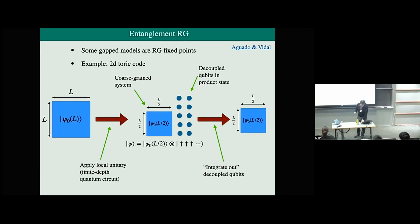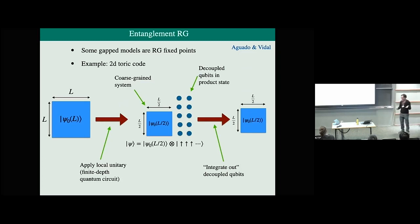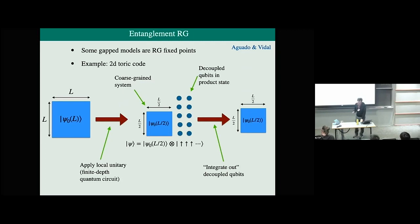If we do this in an infinite system, keeping track of the lattice constant, it would be 'a' here and '2a' there, and then we rescale our units of space and get back exactly where we started. So the toric code is an RG fixed point under this entanglement RG. The fact that the toric code is an RG fixed point gives us hope that the universal properties of the toric code phase should be encoded in some effective continuum quantum field theory.